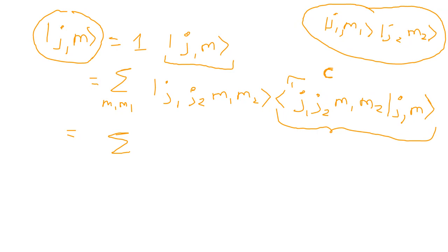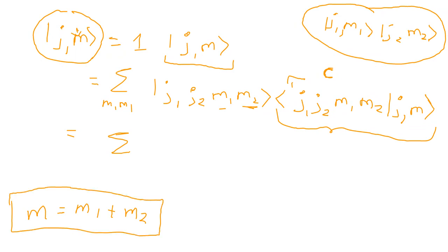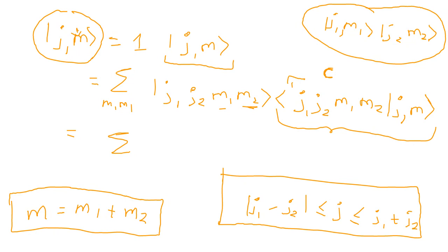So how do you go about computing these numbers? There are selection rules: m must equal m1 plus m2 — if this condition is not met then the Clebsch-Gordan coefficients are automatically zero. Similarly, j must be between |j1 minus j2| and j1 plus j2. If these two selection rules are not met, then your Clebsch-Gordan coefficients automatically vanish.